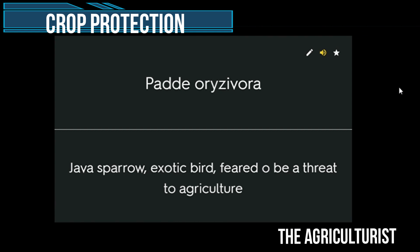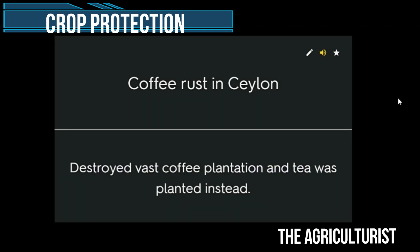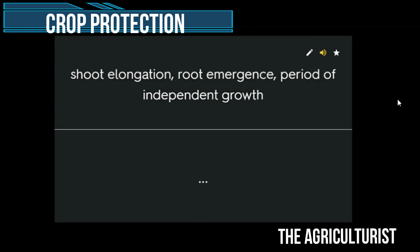Padda oryzivora — Java sparrow, an exotic bird feared to be a threat to agriculture. Coffee rust in Ceylon destroyed vast coffee plantations and tea was planted instead. Chute elongation, root emergence — period of independent growth.